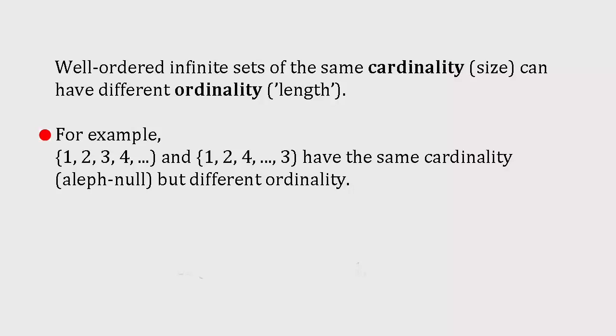After all, if we're talking about finite sets, then it's obvious that {1, 2, 3, 4} and {1, 2, 4, 3} are identical in length, because they both contain four members. But infinite sets are counterintuitive.